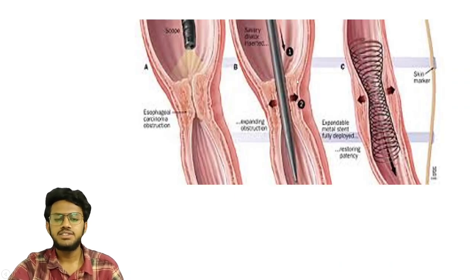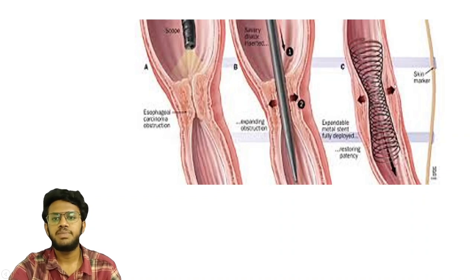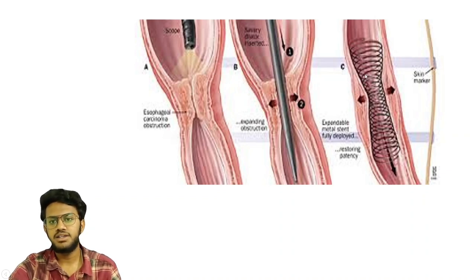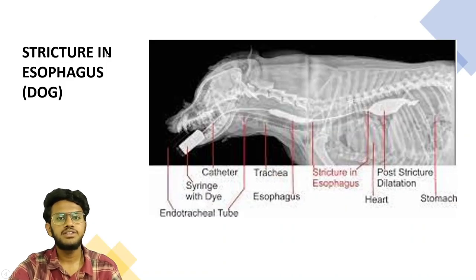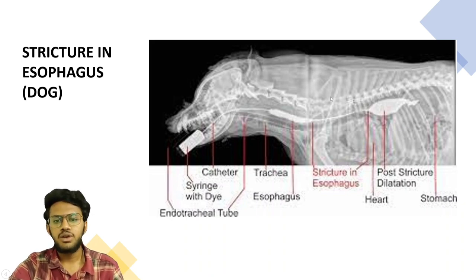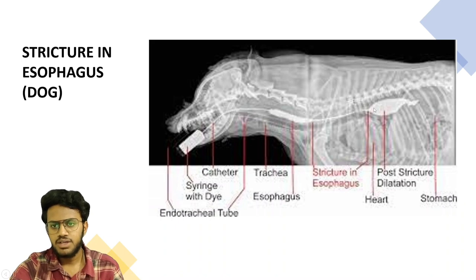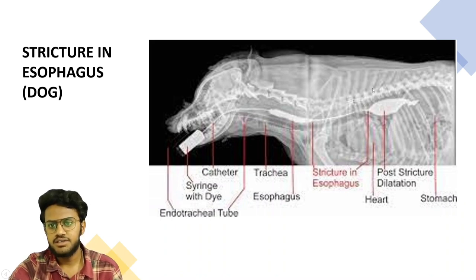There is an image showing treatment of esophageal obstruction by stenting — a stent placed in the region of the narrowed esophagus. This is majorly due to stricture in the esophagus, meaning narrowing of the esophagus. You can also see post-stricture dilation here.